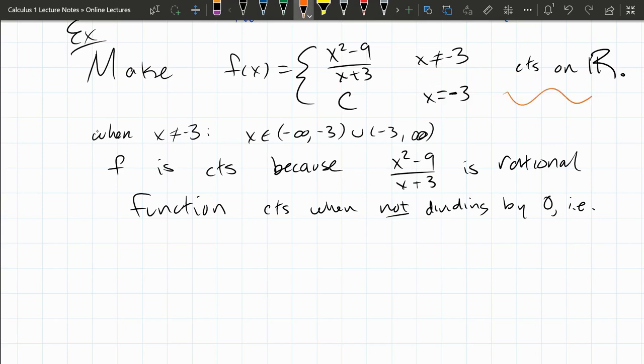So we want to make this function continuous on the real numbers. Now, whenever x is not negative 3, we have a rational function. And remember back, rational functions are continuous on their entire domain. The domain of this rational function is all real values that are not negative 3. So this would be the domain of the rational function. So the function is already continuous here. All we need to do is make the function continuous at x equals negative 3.